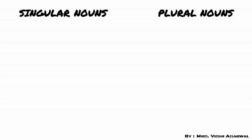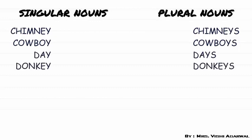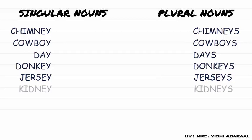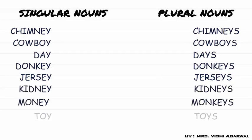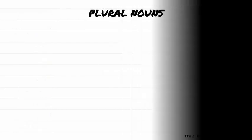Now some more examples of words with a vowel before the Y — in all these words you can see that we have added only S to make them plural.